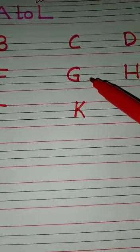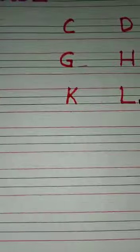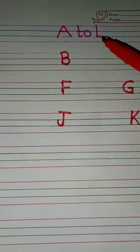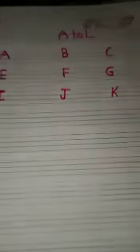G — grapes, H — hut, I — ink pot, ice cream, J — jug, K — kite, L — lamb. Now students, today we write and learn capital alphabet A to L. Thank you.